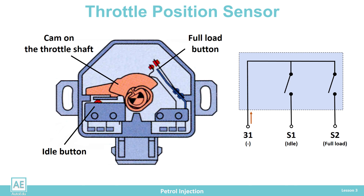When the driver presses the gas pedal, the throttle opens and the cam separates from the first button. Now both buttons are open. Since the control unit is not receiving minus power from either button, it recognizes that the motor is in a partial load state.